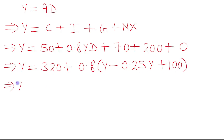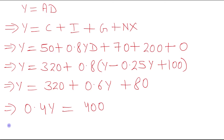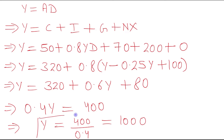Y equals 320 plus 0.8 times 0.75Y plus 80. That gives 0.6Y plus 80. So Y minus 0.6Y equals 0.4Y equals 400. Therefore Y equals 400 divided by 0.4, which equals 1000. The new equilibrium level of income is 1000.